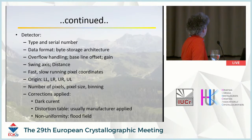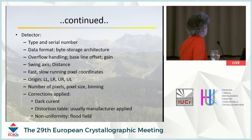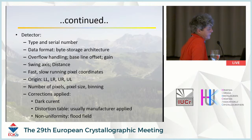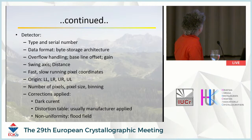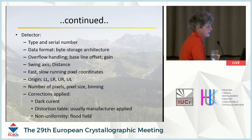For the detector, it would be very useful to have the type and serial number — maybe you can learn typical characteristics from that. The data format should specify the byte storage architecture, how to handle overflows, any baseline offset, the gain, detector-to-sample distance, swing axis, and critically, the pixel coordinate convention: which direction is horizontal or vertical, and where the origin is — lower left, lower right, upper right, or upper left.